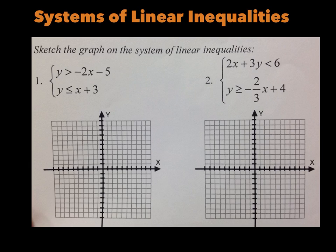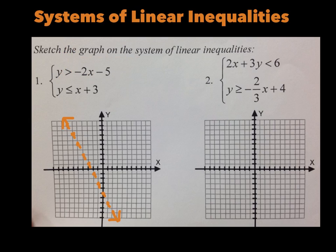Our first example says y is greater than negative 2x minus 5, and y is less than or equal to x plus 3. Let's graph just the first line: y is greater than negative 2x minus 5. The symbol 'greater than' tells me we're going to shade up and use a dashed line because it's not equal to. The y-intercept is negative 5, the slope is negative 2. I'll plot that dashed line and mark up arrows, but I won't shade yet.